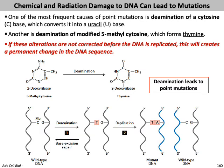In the wild-type DNA, methylated cytosine pairs with G. If deamination occurs, the methylated cytosine becomes thymine. If this alteration is not corrected upon replication, two daughter duplexes are produced — one resembling wild-type and one mutant. This requires a mechanism called base excision repair.